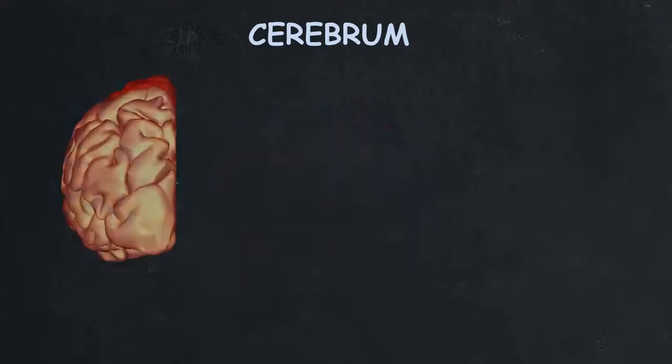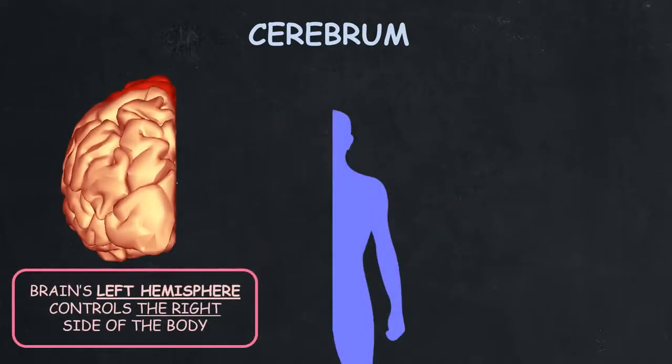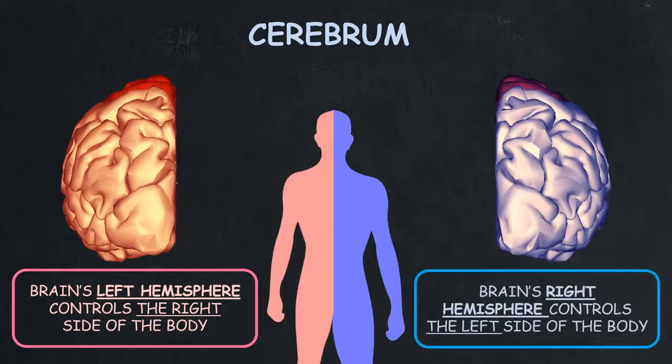The left brain controls the right side of your body, and the right brain controls the left side of your body.